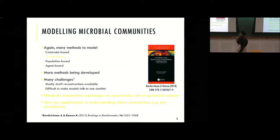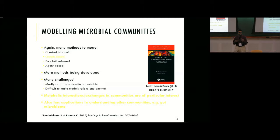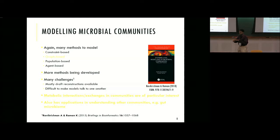The main challenges are: can you make useful conclusions with draft reconstructions? Nobody has the time to accurately curate perfect constraint-based models for so many different gut microbes. It's also difficult to make models talk to one another — every group uses their own acronyms and nomenclature, making it difficult to put models from two different groups together to understand interactions. A lot of studies have shown that metabolic interactions or exchanges in these communities are very interesting and drive how the community forms or stays in a stable state.